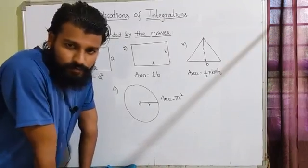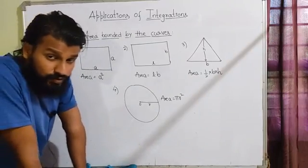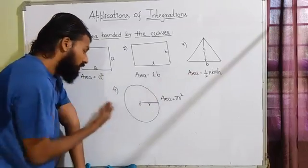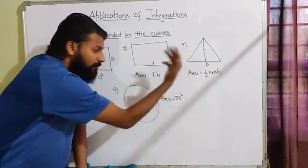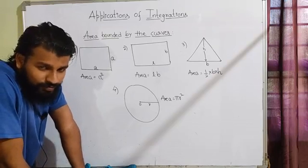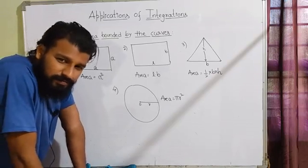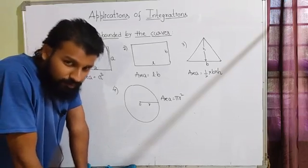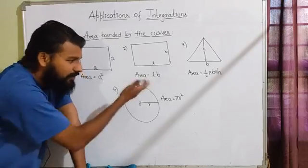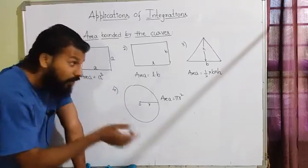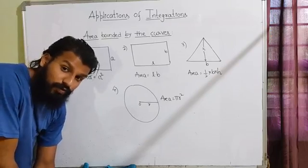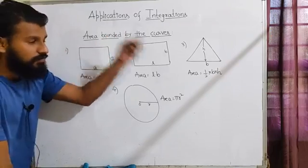My question to you is: how did we get these formulas — a squared, l times b, half bh, and pi r squared? How were these formulas derived? We don't actually know, because we've just been given the formulas and we substitute the data to calculate the area. How these formulas came about is what we are going to study with applications of integration.